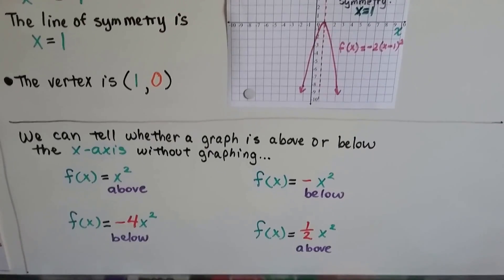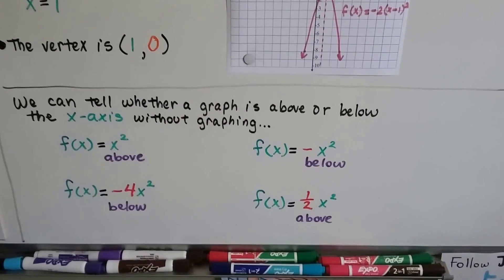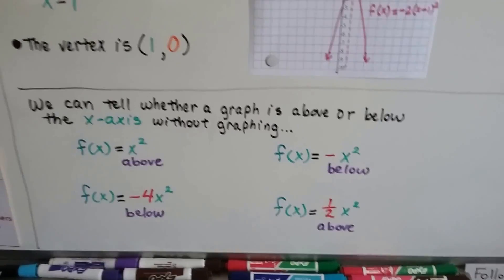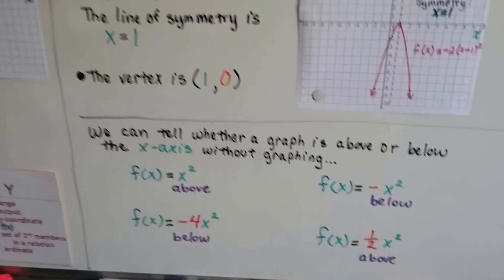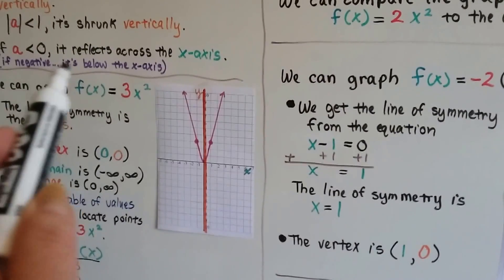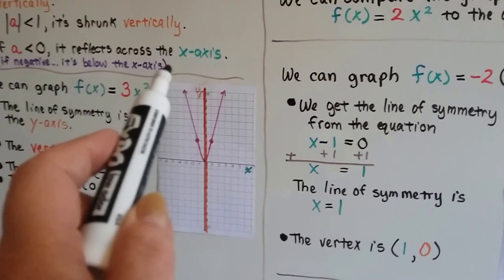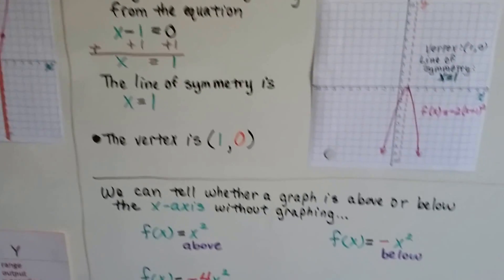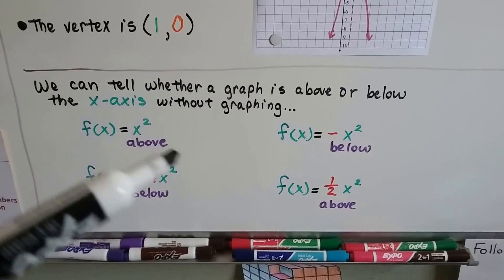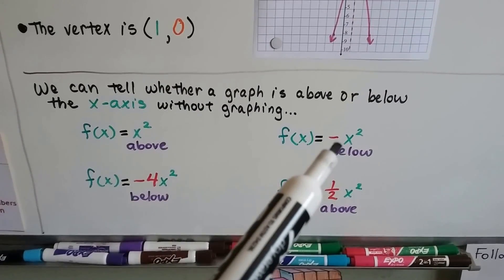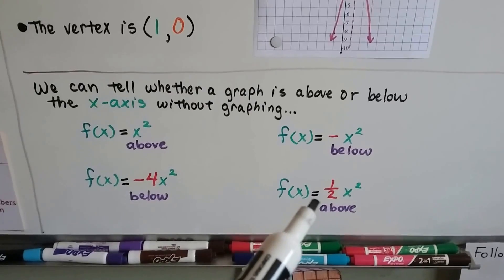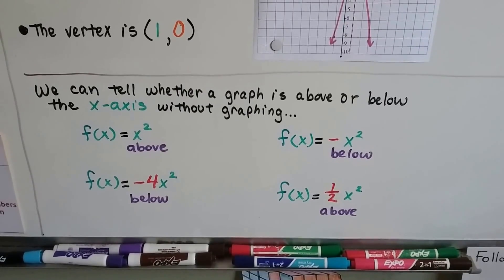We can tell whether a graph opens above or below the x-axis without graphing it: if a is negative, the parabola is below the x-axis. So we can look at each equation — a positive value means opening upward, a negative value means opening downward, below the x-axis.